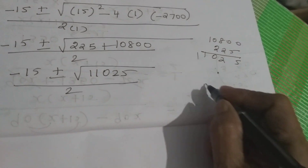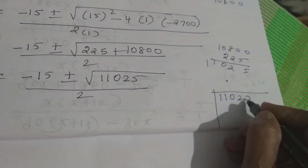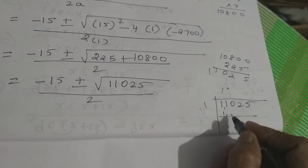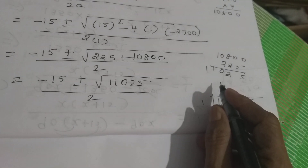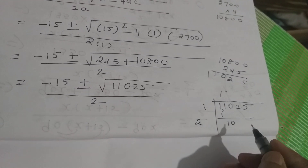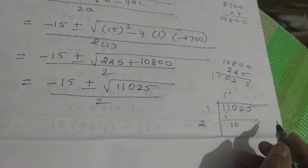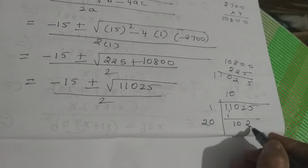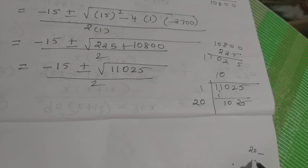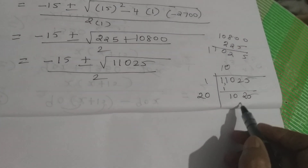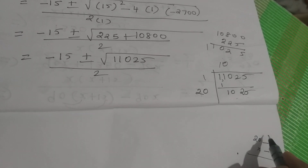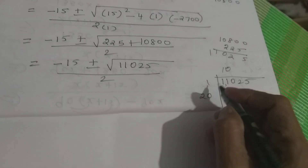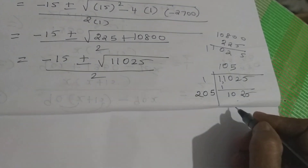Now we have to find the square root of 11025. Working through the square root calculation: 1 minus 1 is 0, bring down 10 — too small, bring down 1025. Multiply 20 by 5 gives 100, and 205 × 5 = 1025. So the square root of 11025 is 105.